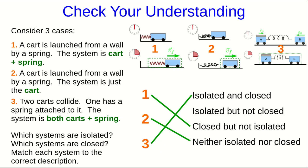System 2 is neither isolated nor closed, because in this case the cart changes its momentum clearly, and also there's a state change outside the system — the spring expanding. And System 3 is both isolated and closed.